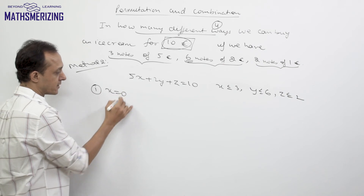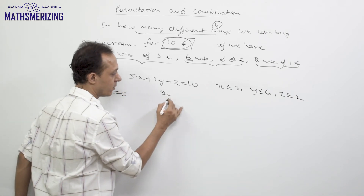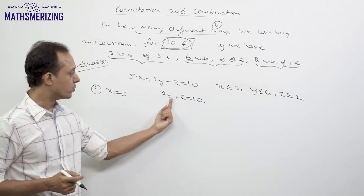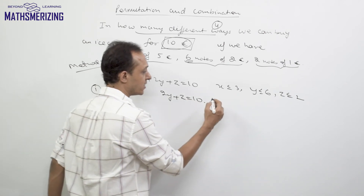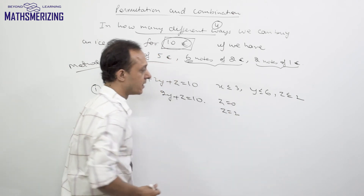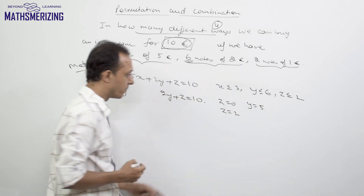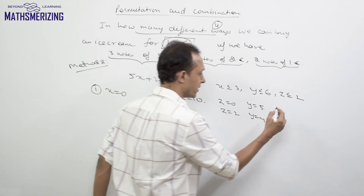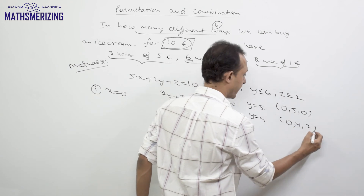Case 1: x = 0. The equation becomes 2y + z = 10. Since y must be an integer, (10 − z) must be even, so z can only be even: z = 0 or z = 2. If z = 0, then y = 5. If z = 2, then y = 4. This gives 2 solutions: (x, y, z) = (0, 5, 0) and (0, 4, 2).